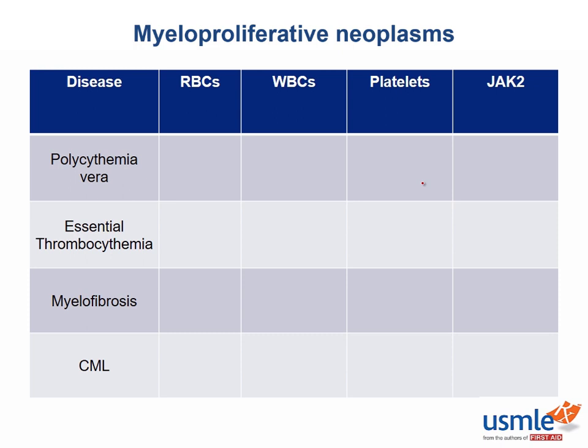When thinking about the myeloproliferative disorders, think about what happens to each individual cell line, whether that be the red blood cells, the white blood cells, or the platelets. For polycythemia vera, polycythemia essentially means elevated hematocrit, and polycythemia vera is actually an increase in all myeloid cell lines. So you'd actually see an increase across the board — the red blood cells, the white blood cells, and the platelets.